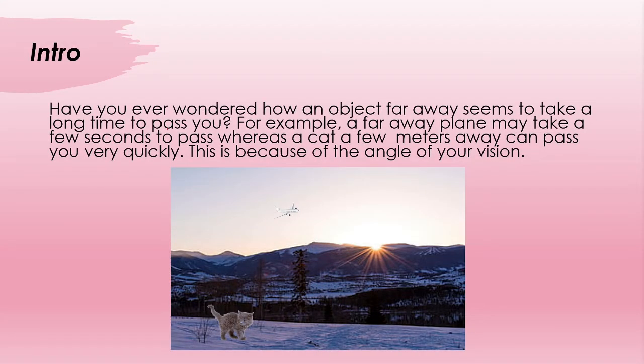Have you ever wondered how an object far away seems to take a long time to pass you? For example, a far away plane may take a few seconds to pass and go away from your range, but a cat a few meters away can pass you very quickly. This is because of the angle in your vision.